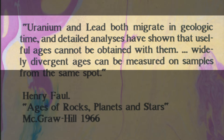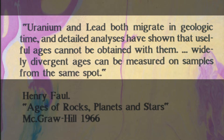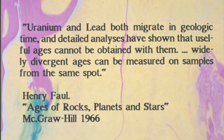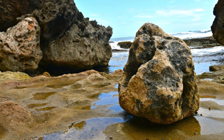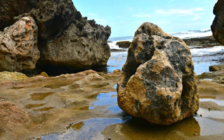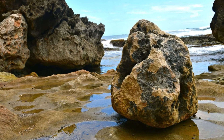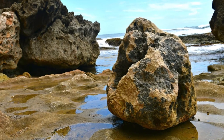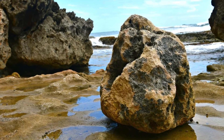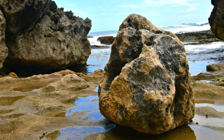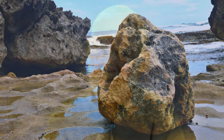Widely divergent ages can be measured on samples from the same spot. You chip off one bit of rock and it gives you one age. You chip off another bit of that same rock and it gives you a completely different age.